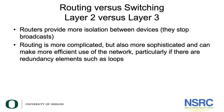Moving on to the core network: the core network is the center of the campus and it's your top-level hub and spoke. Let's talk for a minute about routing versus switching, which is layer two versus layer three. Routers provide more isolation between devices because they stop broadcasts. Routing is more complicated but also more sophisticated.